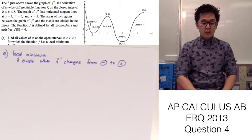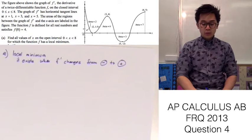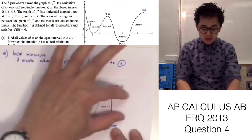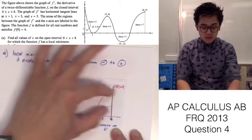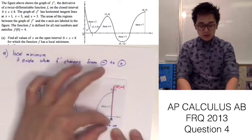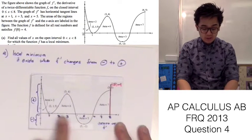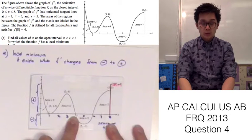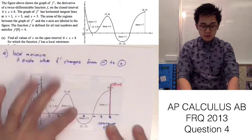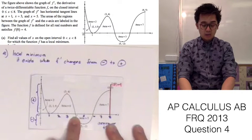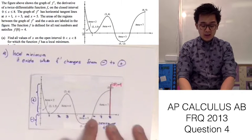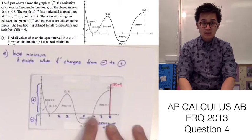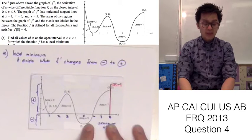The local minimum exists when f prime changes from a negative value. By looking at the graph, we know that the function is in the positive region here — that is the positive slope of our f prime — and this will be the negative slope of our f prime. So our candidates will be at x = 4 and x = 6. However, x = 4 is not our local minimum because it is changing from positive going to negative, so x = 4 is our local maximum. And x = 6 is changing from negative going to positive, so x = 6 is our local minimum.